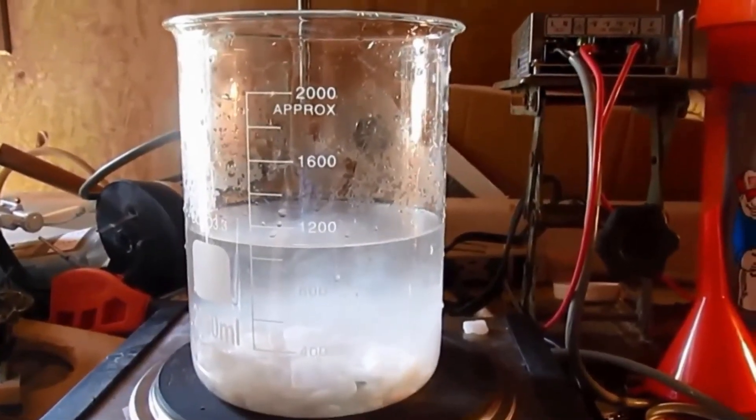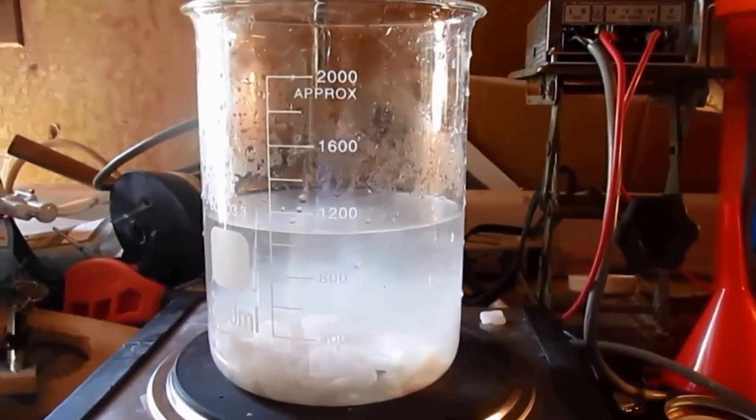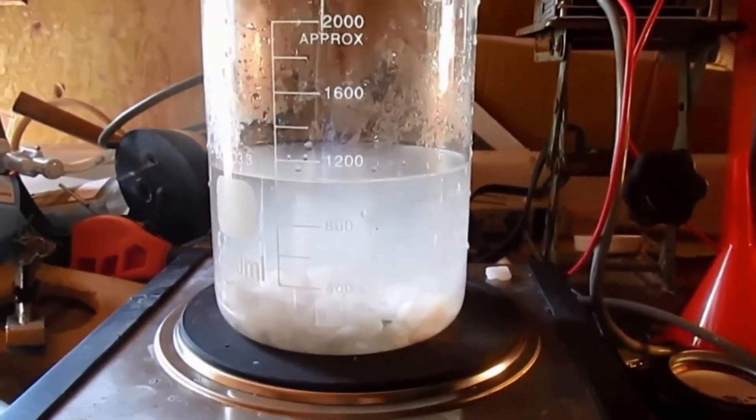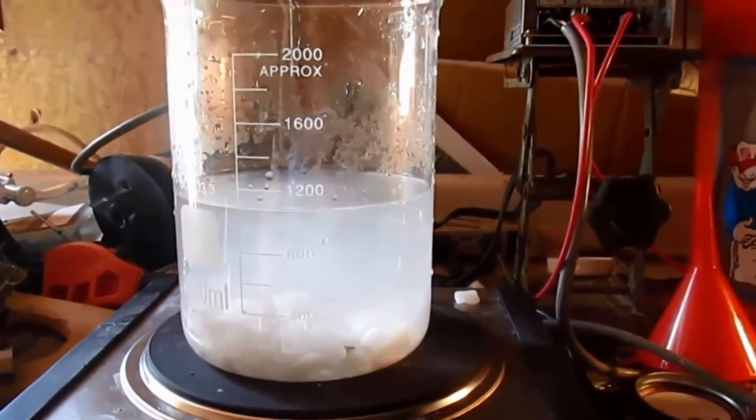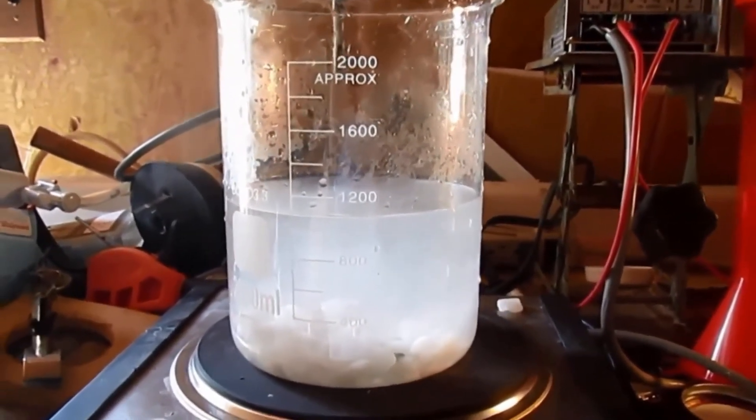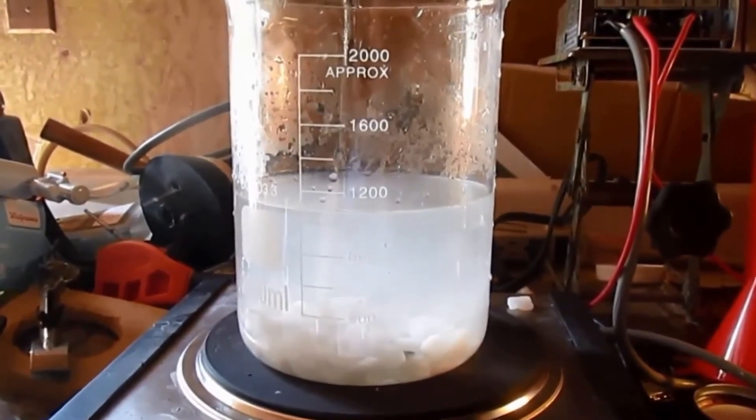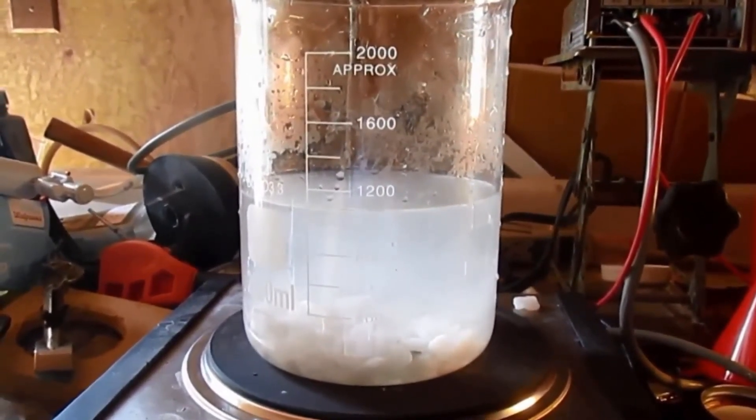After boiling for about 45 minutes, the next step is to prepare a saturated solution of potassium chloride. Using a hot plate, heat the solution to help with the solubility of the potassium chloride.